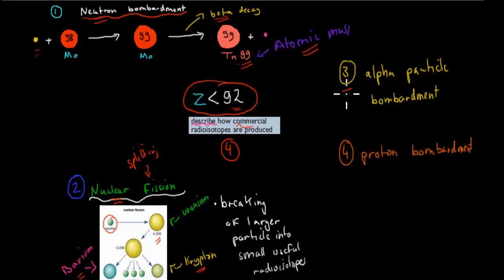And we also have these ones, alpha particle bombardment and proton bombardment. We can use those two as well to actually produce radioisotopes that are used for commercial gains. So in this case, we have to describe the way. So you have to be able to describe roughly how this works.